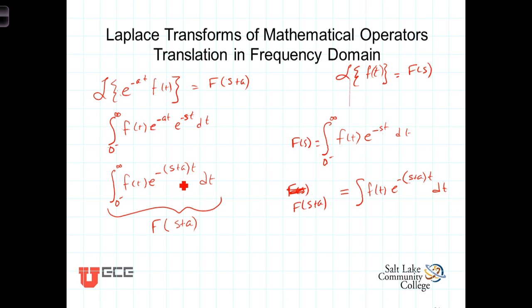This, or the effect of multiplying f of t by e to the minus a t, putting this exponential decay on it, results in the Laplace transform being shifted along the s-axis.